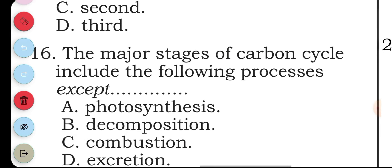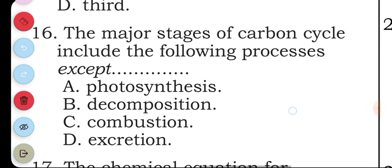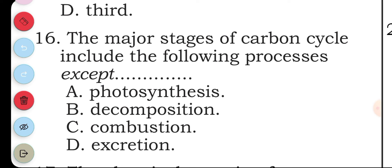Question sixteen: the major stages of carbon cycle include the following processes except: A photosynthesis, B decomposition, C combustion, D excretion. The answer to question sixteen is D, excretion.